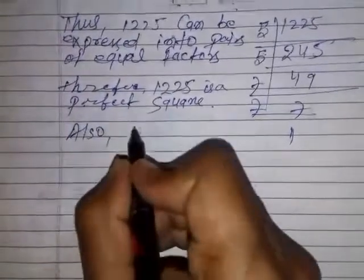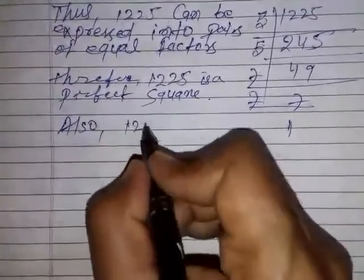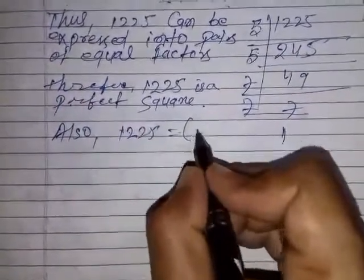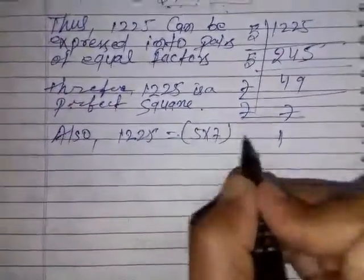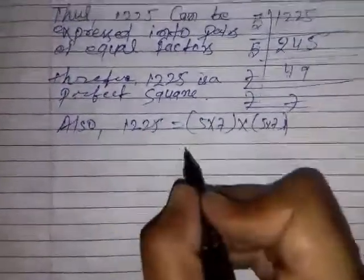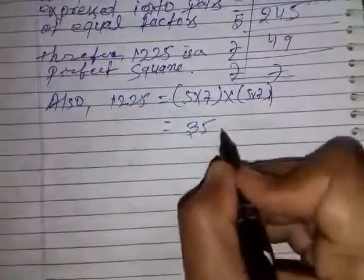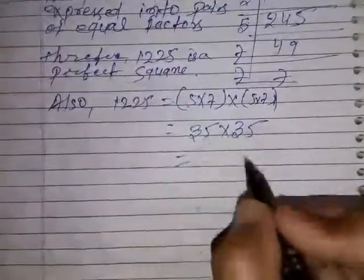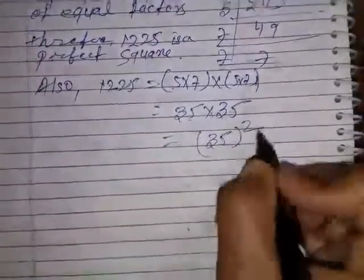Also, 1225 equal to, we can write 5 into 7 into 5 into 7. We can write 5 times 7 is 35, 5 times 7 is 35. Can we write it like this?